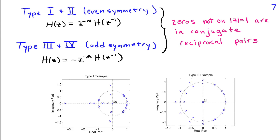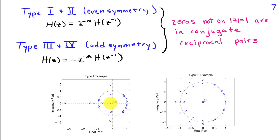For a Type 1 FIR filter of order 20, there are 20 zeros. Some zeros lie on the unit circle, but those off the unit circle occur in conjugate reciprocal pairs: if there is a zero at radius r, there is another at radius 1 over r, and the complex conjugates are also present. Similarly, zeros on the real axis at distance r from the origin have a corresponding reciprocal zero at 1 over r. With an FIR filter, all poles are at the origin.